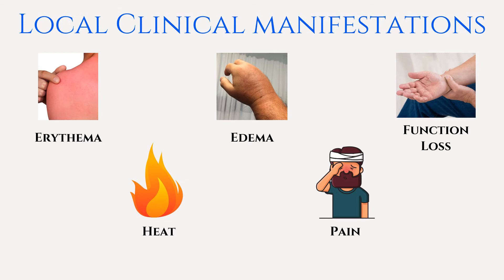The vasodilation caused by various inflammatory mediators results in erythema, or redness, at the inflamed site. Vasodilation also causes the warmth associated with inflammation. Edema is caused by increased vascular permeability and accumulation of exudate. Prostaglandins, bradykinin, pH changes, and exudate contribute to pain.